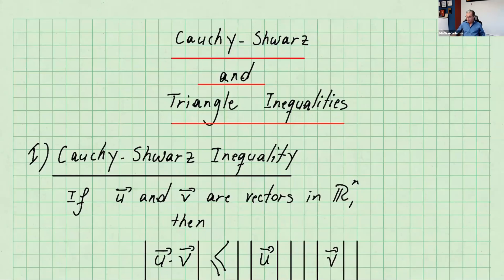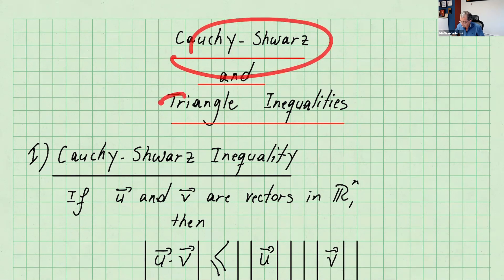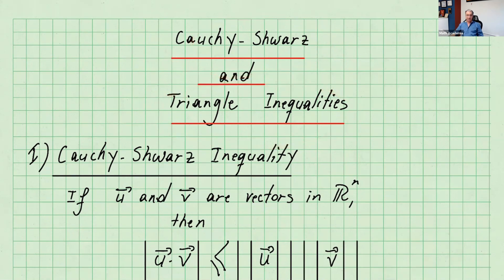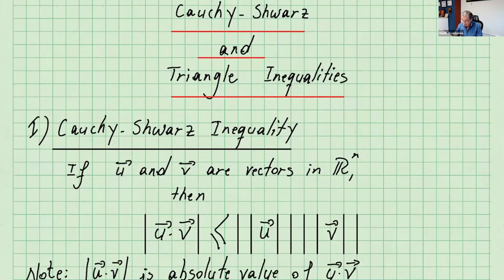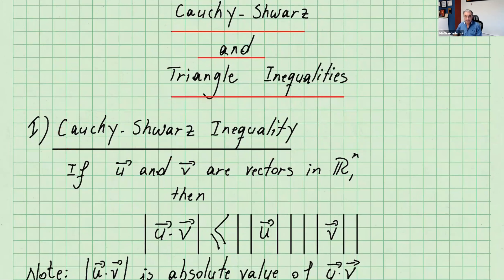Hi and welcome everyone. In this video I want to go over the Cauchy-Schwarz and triangle inequalities, which involves the dot product and the magnitude or the norm of vectors. So let's start with Cauchy-Schwarz inequality.